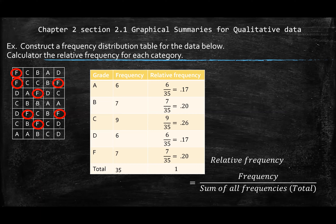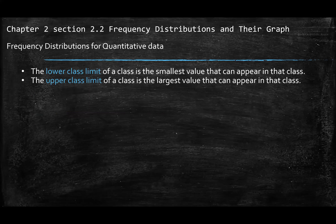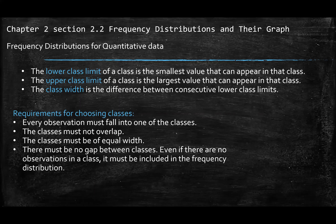The frequency distribution table does not have a relative frequency built in. On your homework, they will ask you to construct the frequency distribution table — you tally your data — and separately, relative frequency is each frequency divided by the total. Now, for quantitative data involving numbers, sometimes the data is very massive and the range is very big, so we want to group them together.